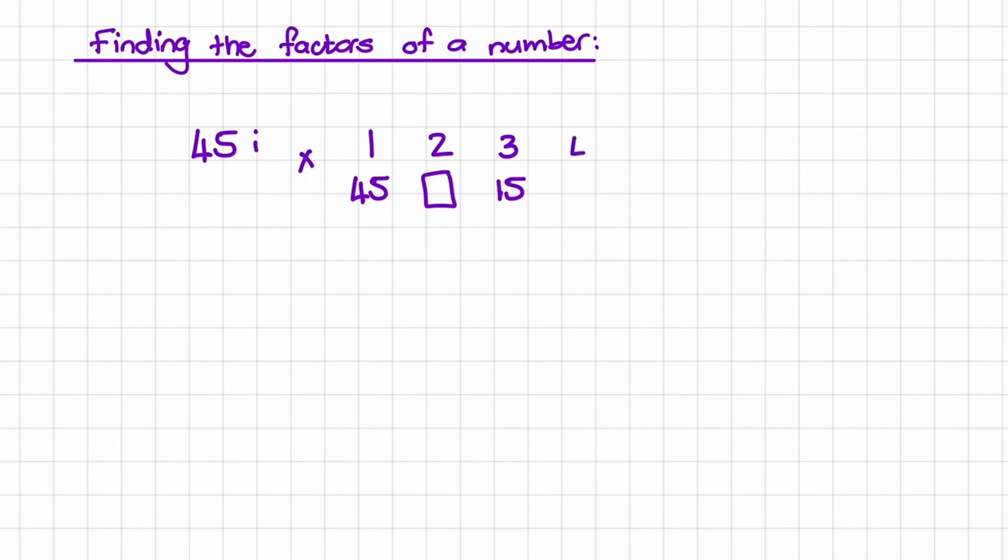Then I move on to 4 and there's no number that I can multiply with 4 to get to 45. Then I move on to the next number which is 5 and 5 times 9 will give me 45.